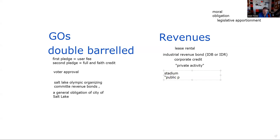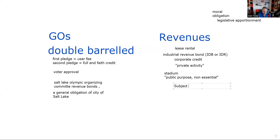This is called a public purpose, non-essential bond. It's not like building a high school. The reason I bring these two bonds up is because if you are subject to the AMT, these are taxable. So it becomes a suitability question — before recommending these Raider stadium bonds, you'd ask: are you subject to the alternative minimum tax?